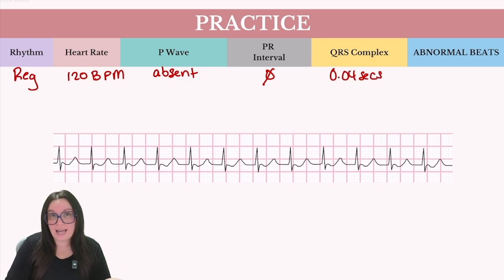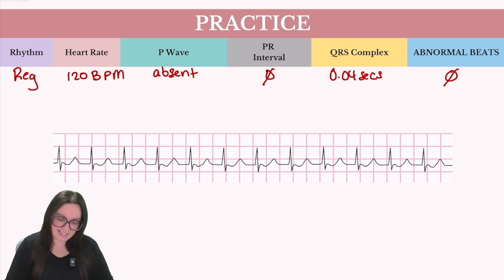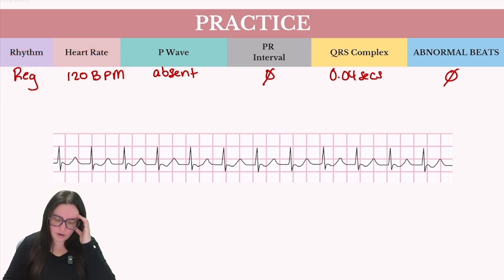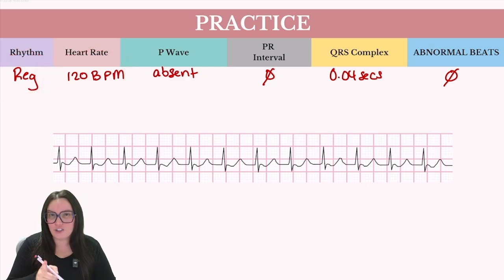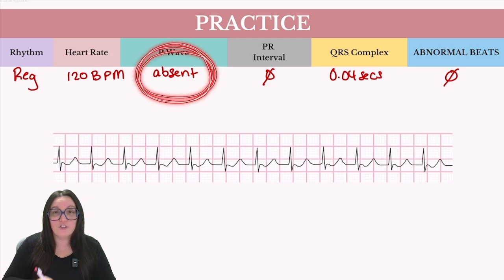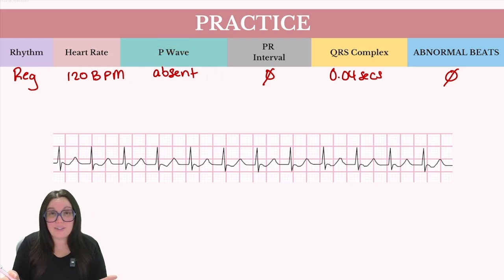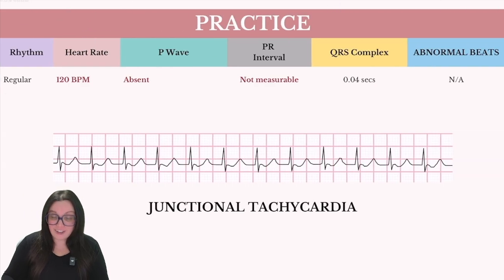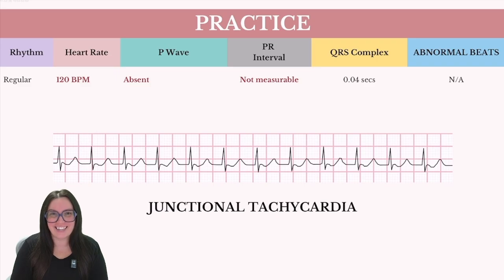And lastly, do we have any abnormal beats? Not that I can see — so we can eliminate that. Taking a look at our criteria: I have a regular rhythm at 120 beats per minute, so I know I'm dealing with some kind of tachycardia. But what makes this a junctional rhythm is the fact that I have absent P waves. So based on what I can see here, I have a junctional tachycardia.